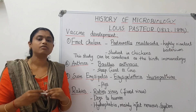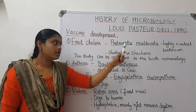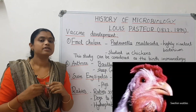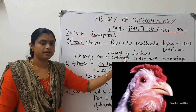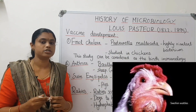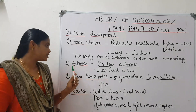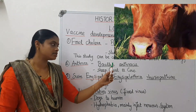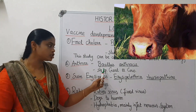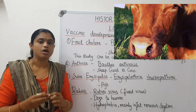The first is Fowl Cholera, caused by a specific microorganism or bacteria. Next, Anthrax is caused by Bacillus anthracis, which affects sheep, goat, cow, cattle, and other animals. A vaccination was developed for this disease.